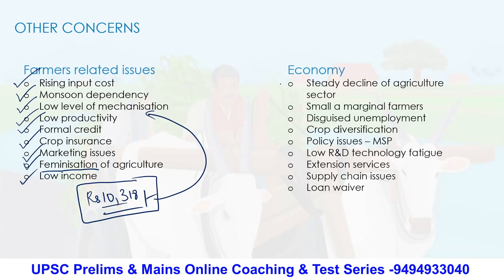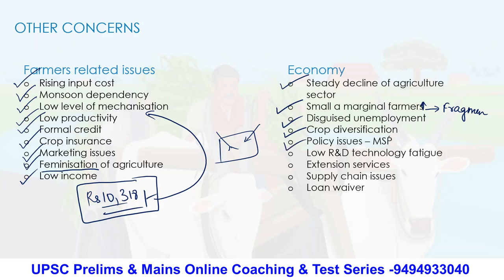Coming to issues with respect to the economy: there is a steady decline in the agriculture sector's share — from 50% to 20%. Small and marginal farmers are more, which leads to fragmentation in land holdings and disguised unemployment, where most people are recruited for a small land. No crop diversification, MSP policy issues, low research and development, supply chain issues, and loan waivers — which seem beneficial but in the long run affect the fiscal situation of a country or state.